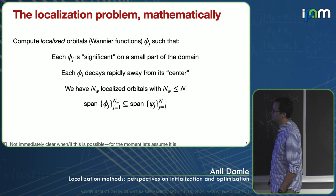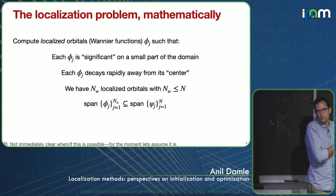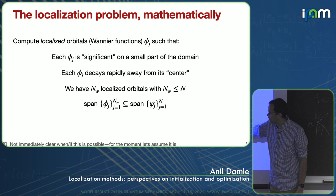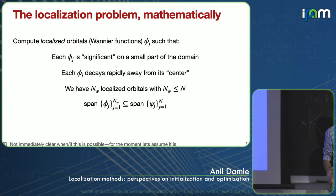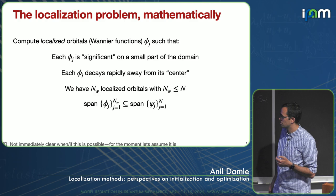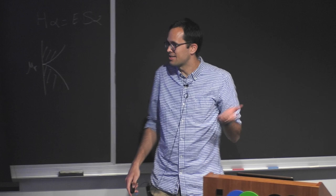I'm going to sometimes want fewer functions than I have eigenfunctions, particularly where you don't have a gap in a system or you're looking at entangled bands. For the first part of this talk, NW will always equal N. If NW equals N, I want the span of the local functions to equal the span of the eigenfunctions. If NW is less than N, I want the span of the local functions to be contained in the span of the eigenfunctions, so I have to identify a nice subspace.